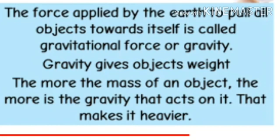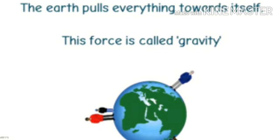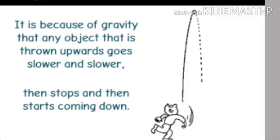Example, we have seen apple falling from a tree. All the objects that go up come down to the earth. The earth pulls everything towards itself. This force is called gravity. It is because of gravity that any object that is thrown upwards goes slower and slower, then stops and then starts coming down.